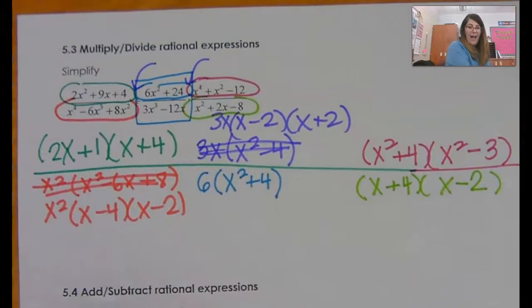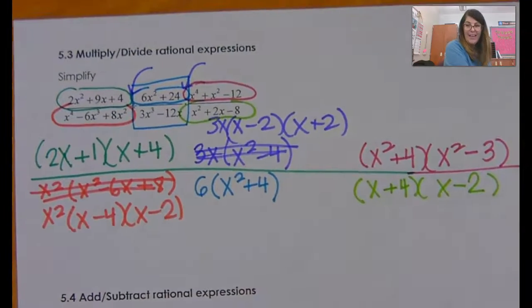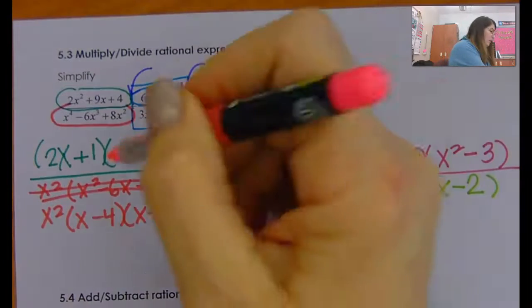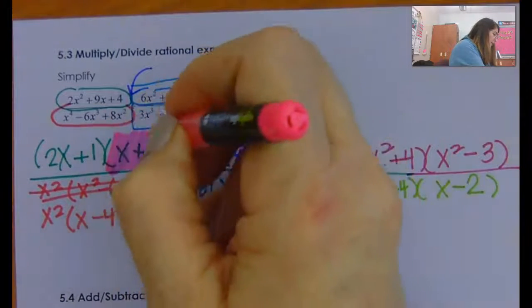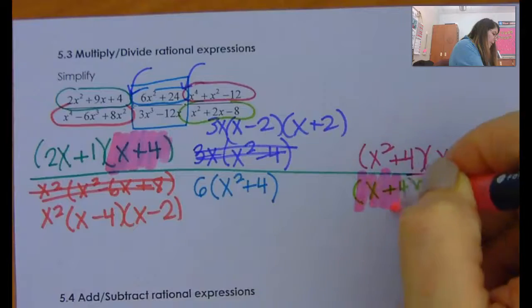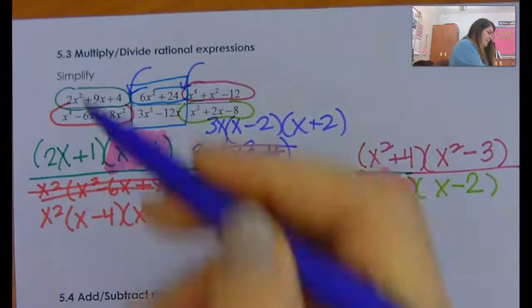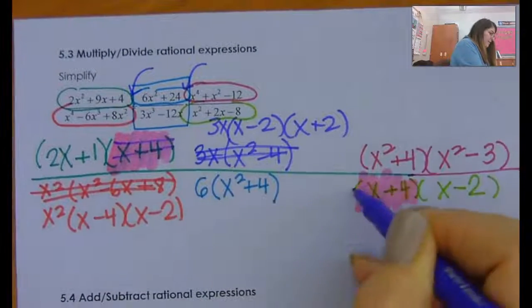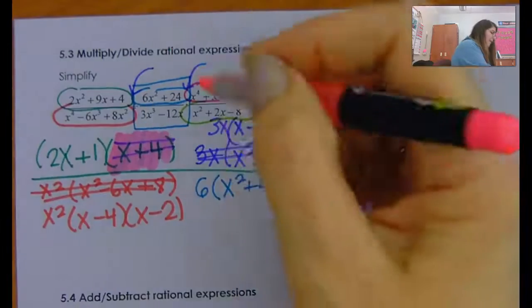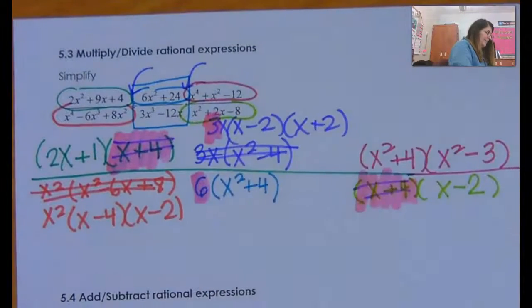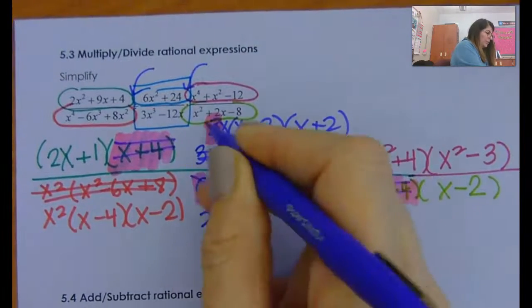Now I've got this all written out like this, and now I have to find what's the same and will cancel. So an x plus 4 over an x plus 4 cancels. The 3x, well the 3 and the 6, so the 6 will become a 2.